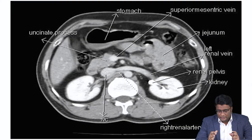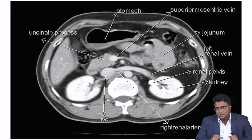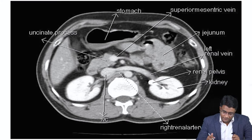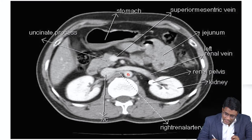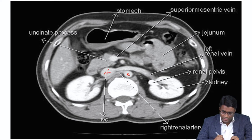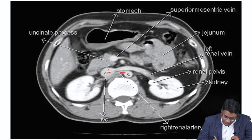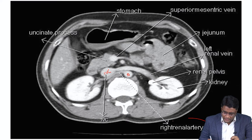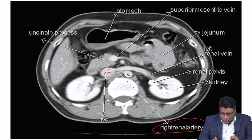Now let's try to understand the vessels in this image — please look at the image carefully. You can identify this is the aorta, and this structure here is the inferior vena cava. Just from the aorta going towards the right kidney, if you trace this carefully, this vessel coming from the aorta tracing towards the right kidney is your right renal artery.